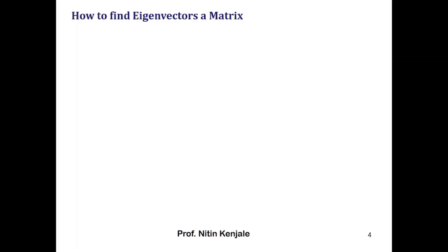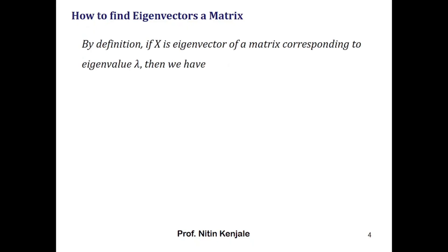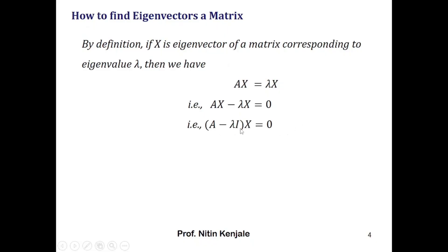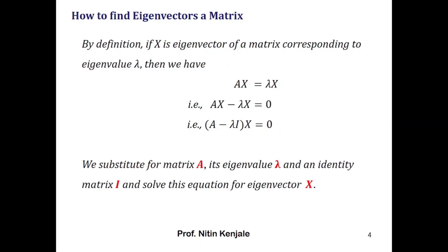Now let us see how to find the eigenvector of a matrix. The eigenvector is the nonzero vector x such that Ax = λx. Taking λx to the other side gives Ax − λx = 0. Since x is common, we factor to get (A − λI)x = 0. By substituting matrix A, identity matrix I, and the eigenvalue λ, we can find the eigenvector x.